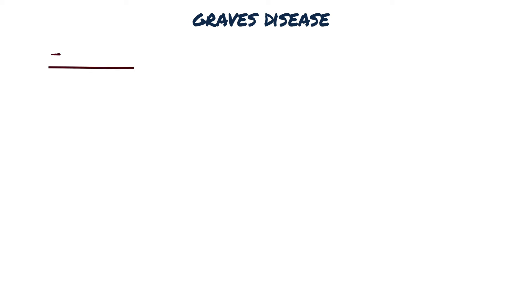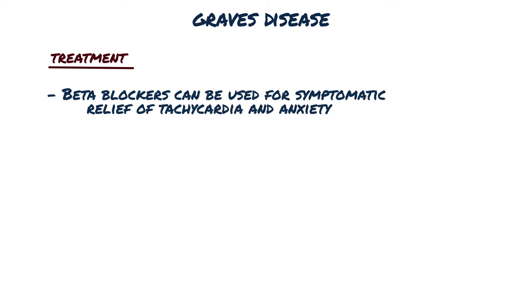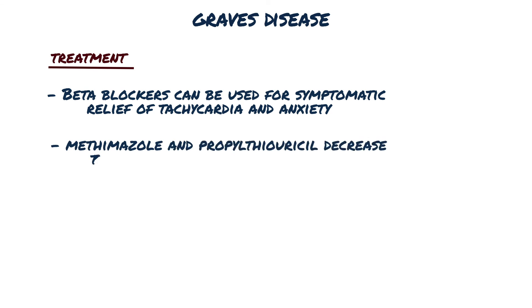As mentioned, hypothyroidism speeds up many physiological functions. Beta-blockers can be used for symptomatic relief of tachycardia and anxiety. In cases of thyroid hormone hypersecretion, the treatment goal is to reduce the amount of circulating thyroid hormone. Both methimazole and propylthiouracil decrease thyroid hormone synthesis, and propylthiouracil also reduces peripheral T4 to T3 conversion.